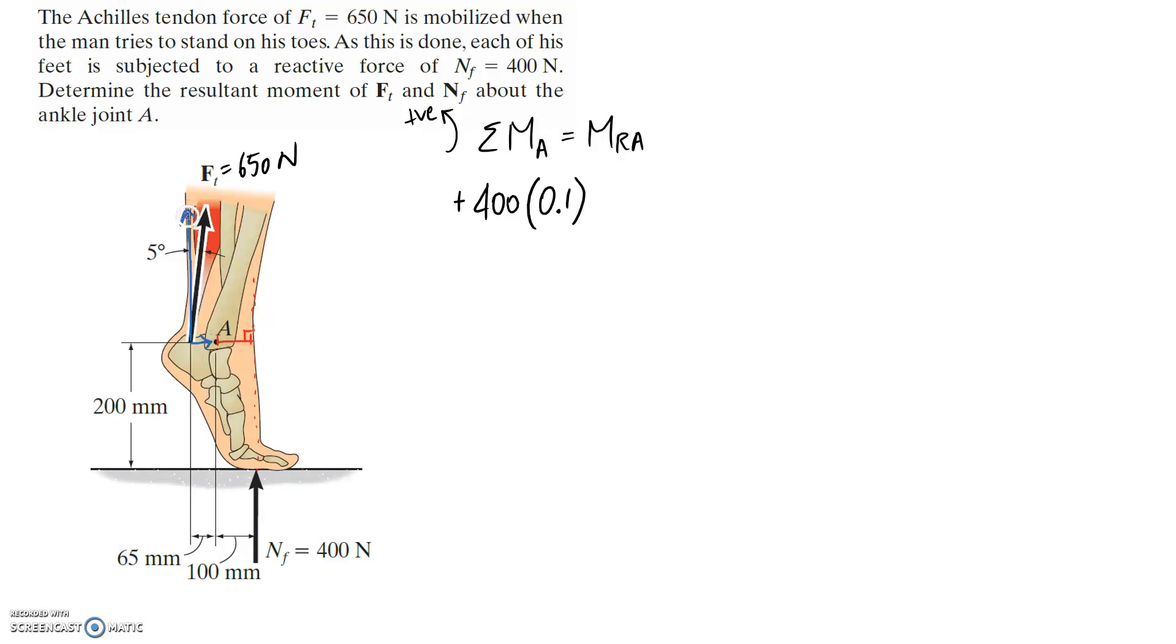If we start with this vertical part, we can work out its size. It's going to be 650 and we know it's a five degree angle in here and it's the adjacent side, so it's going to be cos of that five degrees.